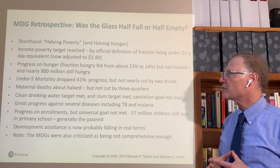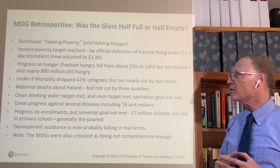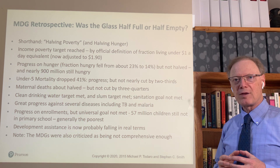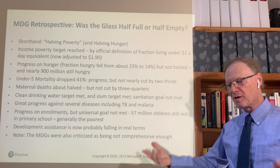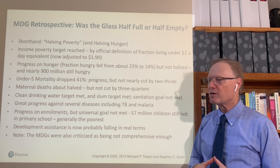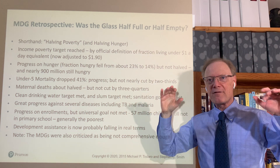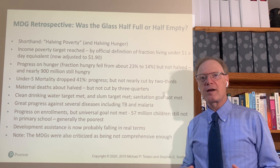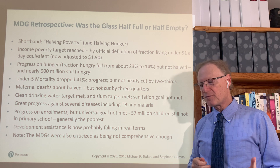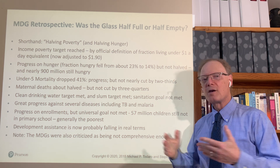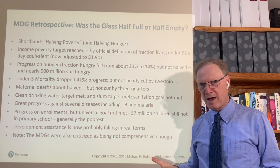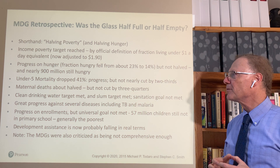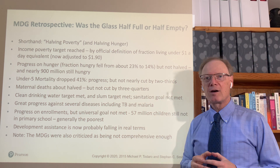It was thought that these sweeping goals could not be fully reached in this period, so targets were set, along with indicators for how we were doing on each target. The shorthand idea was halving poverty — cutting income poverty in half, meaning the fraction of people living under what was then $1.25 a day (now adjusted to $1.90) — and also cutting hunger in half.